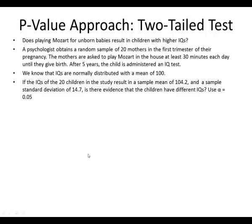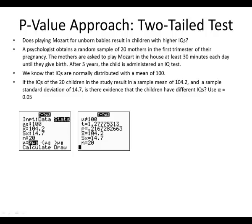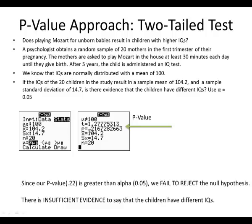For the p-value two-tailed approach, we look at the line below our test statistic and check whether the p-value is smaller than alpha — if it is, we reject. Our p-value is 0.22, which is greater than alpha, so we fail to reject the null hypothesis. There is insufficient evidence to say that children have different IQs. We get the same answer using the p-value and the classical method — your results will always be the same.